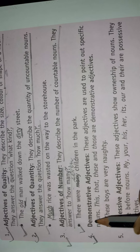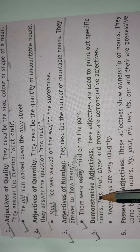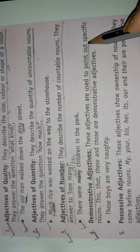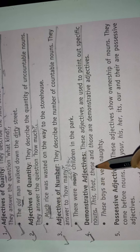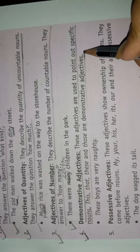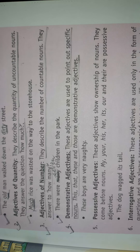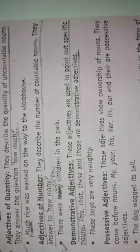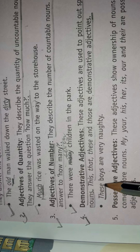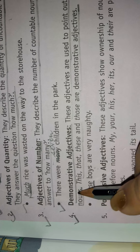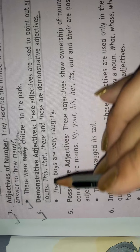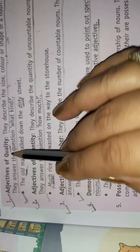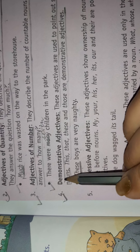Number four: Demonstrative Adjective. These adjectives are used to point out specific nouns. 'This,' 'that,' 'these,' and 'those' are demonstrative adjectives — but only when a noun follows directly after them. For example: 'These boys are very naughty.' Here, 'these' is a demonstrative adjective and 'naughty' is an adjective of quality.